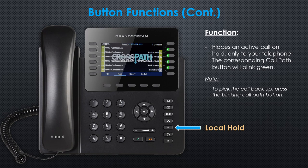Unlike Global Park Hold, the Local Hold button places an active call on hold only to your telephone. After pressing the local hold button, the corresponding call path button will blink green. To pick the call back up, simply press the blinking call path button.